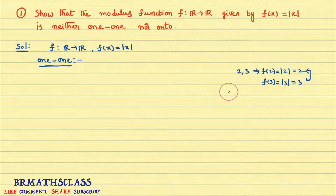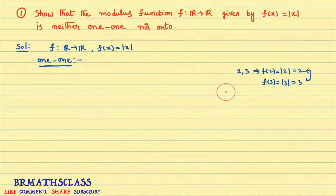Please try to understand. When the function is not one-one, feel happy — just give one counter example to show that this function is not one-one.